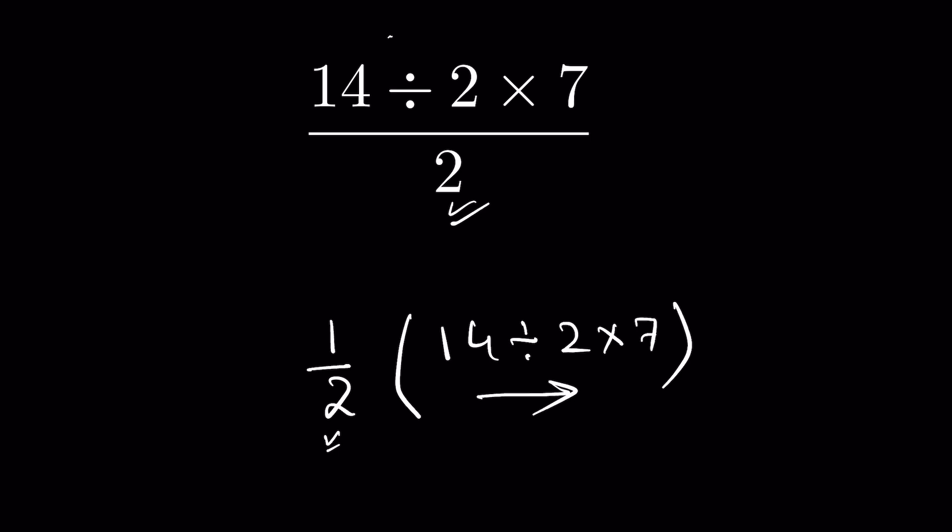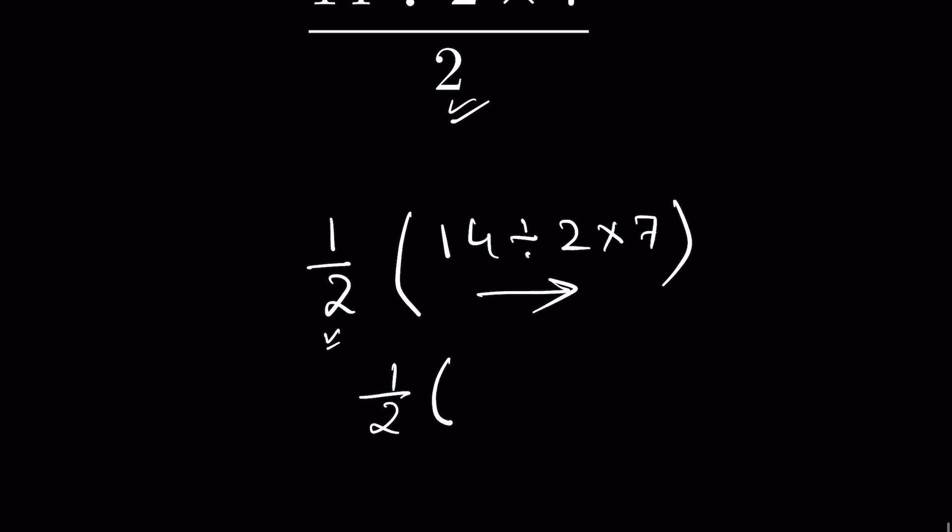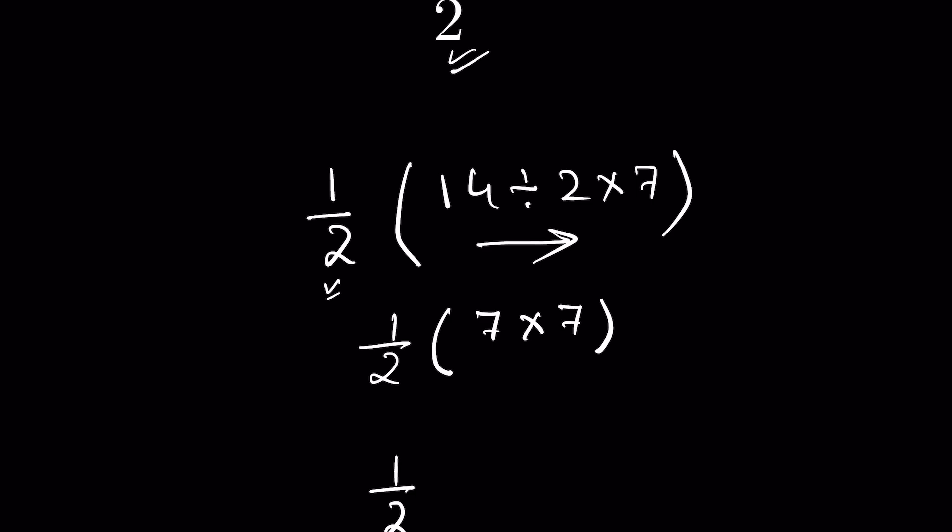This means that division comes first, so it will be 1 upon 2, then 14 divided by 2 is 7, and then 7 times 7. So 1 upon 2 times 49, because 7 times 7 is 49.